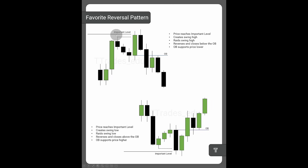The first thing I start with is an important level — whether this is a PD array or buy-side liquidity resting above price. On a lower time frame, price reaches up and puts in a swing high, then reaches up and raids this high. My eyes go to this up-close candle or series of up-close candles. When price closes below this up-close candle, it validates this order block, and I'm looking for it to support price lower.